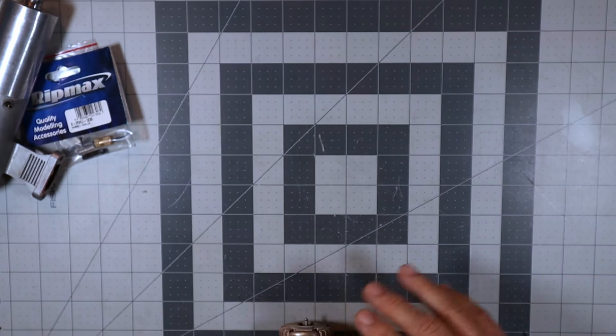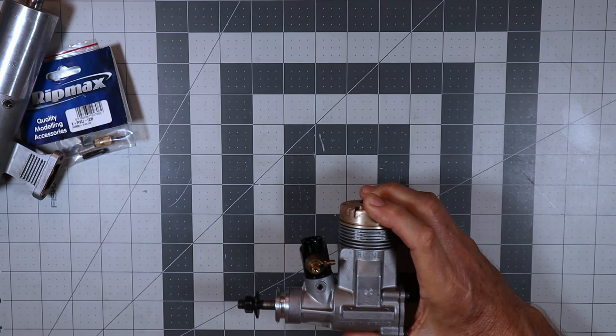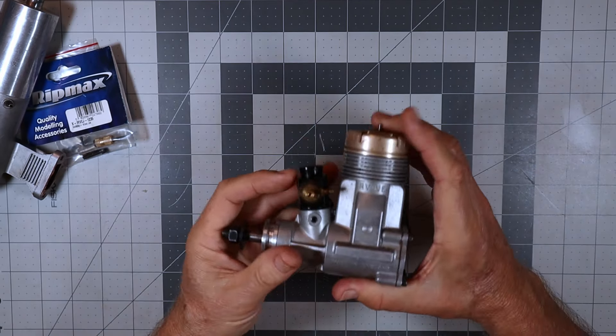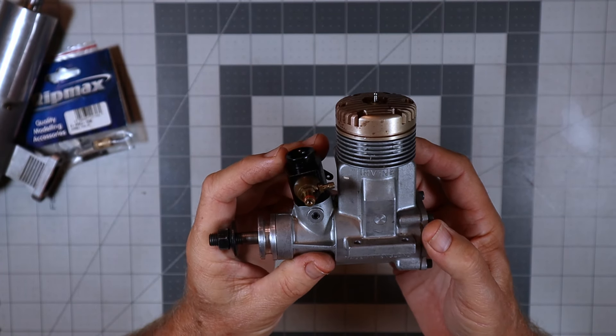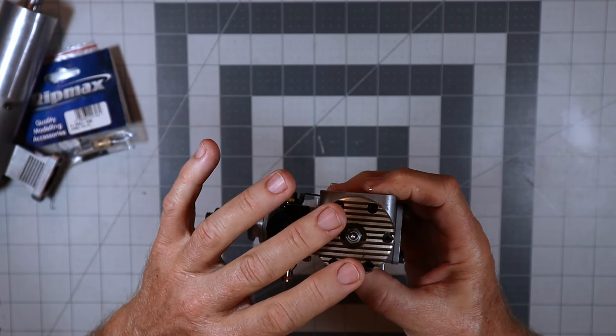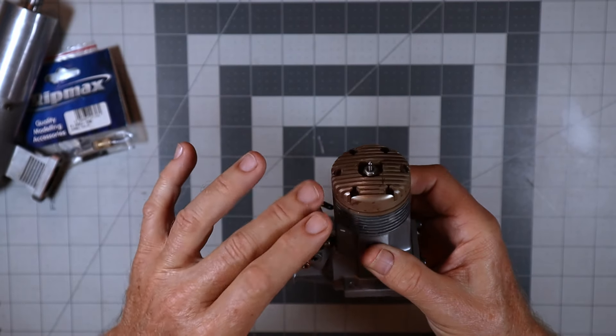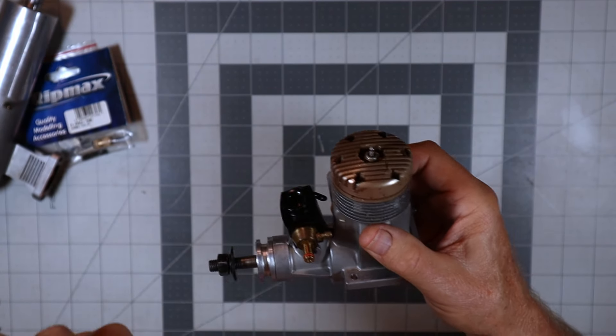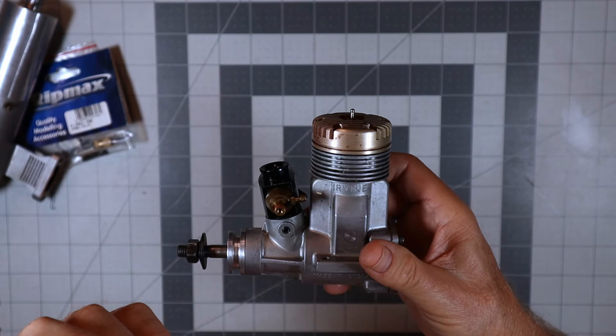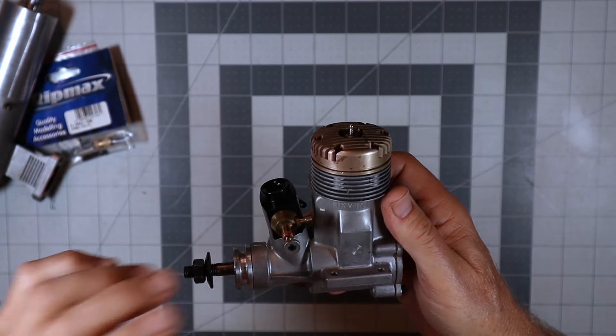So here is the engine in all its glory. Now I believe I've seen these with like a gold, well this one's got what looks like a gold anodized head. I thought I had seen in one of these an image where it had a red head, but I can't say for sure if my memory is correct or not.